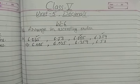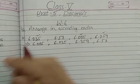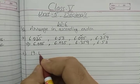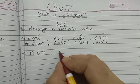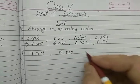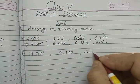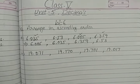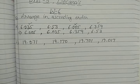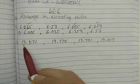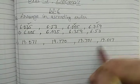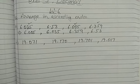Now let us take one more example, part B: 19.071, 19.170, 19.701, and 19.017. We have to compare these decimal numbers. The procedure is the same — first we see the whole number parts: 19, 19, 19, 19 — all the same — so we can't compare them by the whole number part.